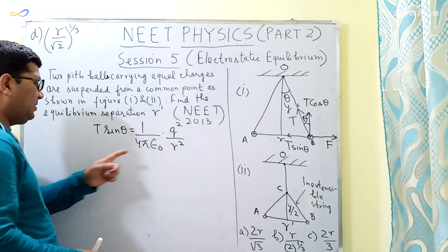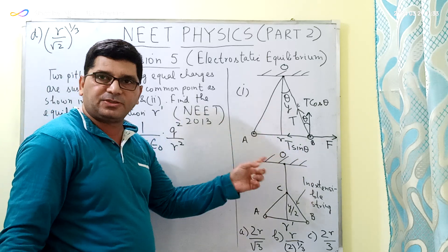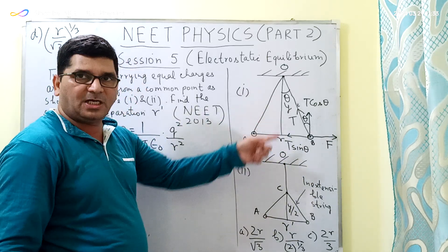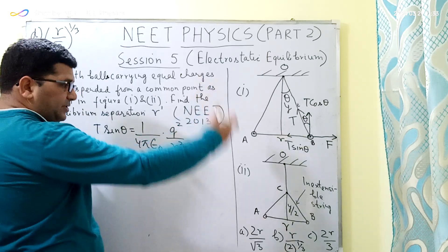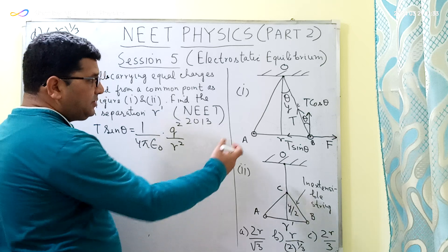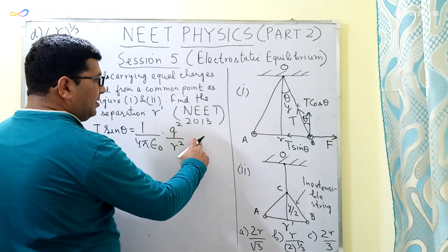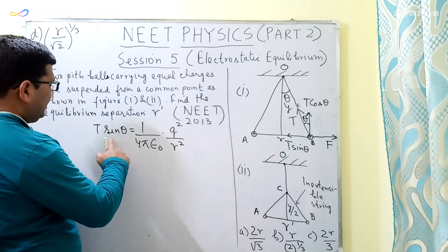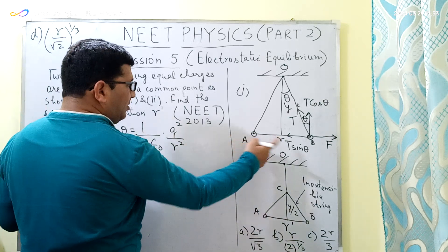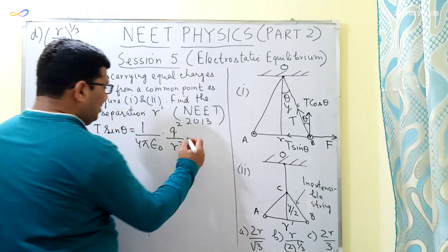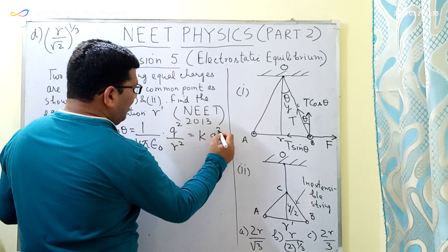The formula uses epsilon-0 when the entire system or configuration of charge is placed in free space or vacuum. So we are considering this configuration of charge is placed in free space. T sin theta equals 1 over 4 pi epsilon-0 times Q squared over R squared, where Q is the charge on each pit ball. I will take 1 over 4 pi epsilon-0 as K, which is a constant, so T sin theta equals K Q squared over R squared.